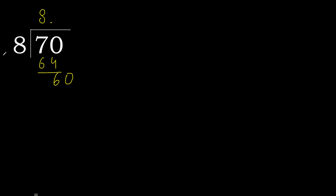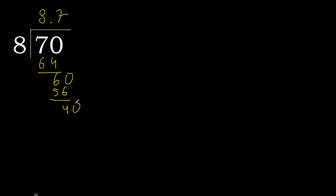60. 8 multiplied by 8 is greater. Multiply by 7: 56 is not greater. Subtract — remainder is 4. Complete.